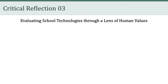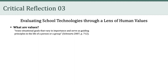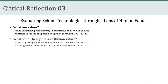One way values have been defined is as trans-situational goals that vary in importance and serve as guiding principles in the life of a person or a group. In fact, in 1992, Professor Shalom Schwartz from Hebrew University created the now-famous Theory of Basic Human Values. According to Schwartz, his goal was to identify a comprehensive set of values that are recognized in all societies.